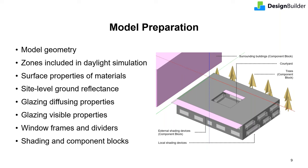Now let's look at the key model data related to daylighting. This slide summarizes the key factors in model data that affect daylight results. These include model geometry, surface and glazing properties, and shading and surrounding buildings. Let's discuss each of these within the software.